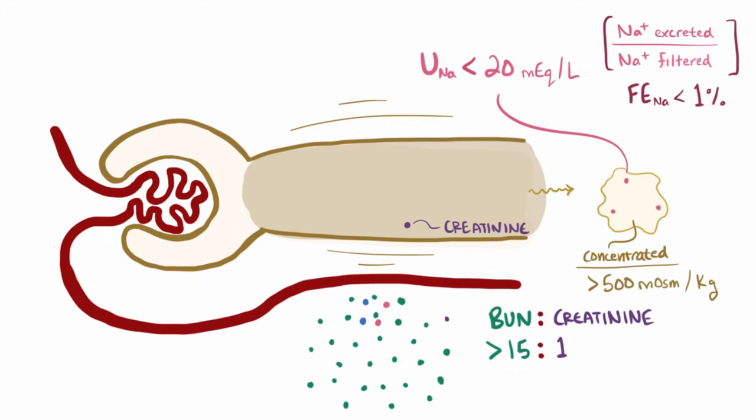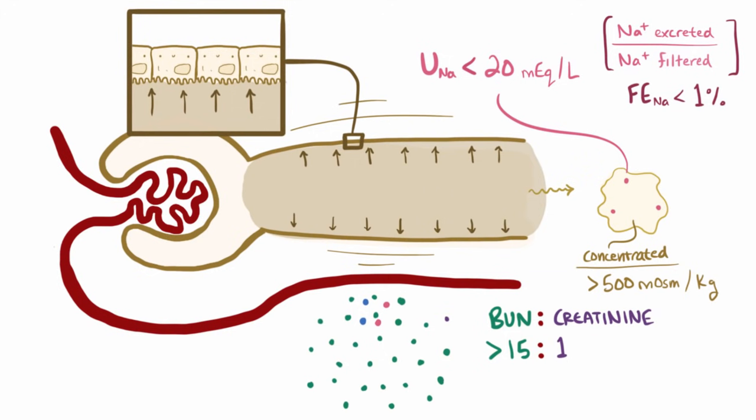Alright, so I said normally before because over time that increased pressure damages the epithelial cells that are responsible for reabsorption in the tubules. When that happens, less and less urea gets reabsorbed back into the blood, and instead it stays in the tubule and then gets dumped out into the urine. And this causes the BUN to creatinine ratio in the blood to fall below 15 to 1.